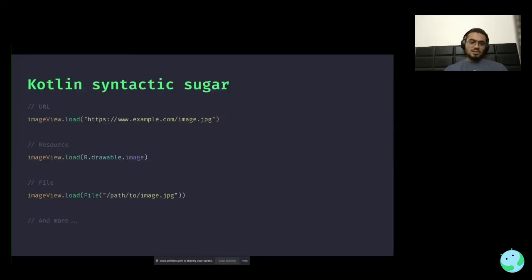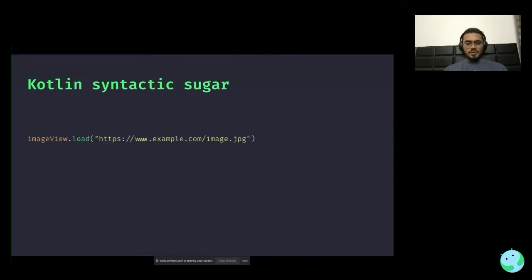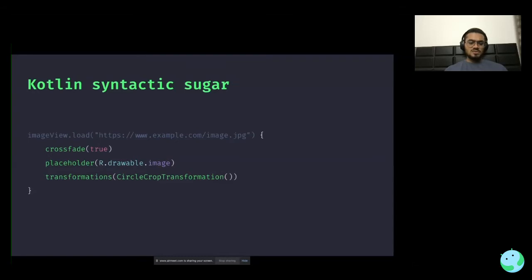For Kotlin users, the library has a nice extension function on top of ImageView that does a lot of heavy lifting — creating the image request and passing it to the image loader. You just call the load function on the image view and pass in your image source, which could be a URL, a resource, or a file. If you want to further customize things like animation, transformation, and placeholder, that is possible through a trailing lambda. This lambda is a lambda with receiver on the image request. Under the hood it creates the image request for you and feeds it to the image loader.